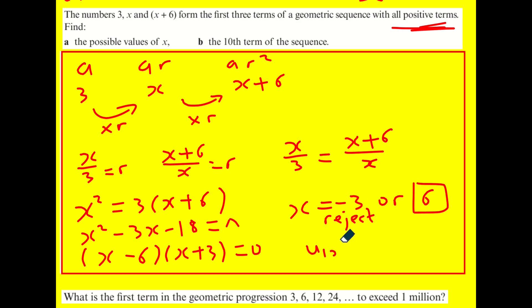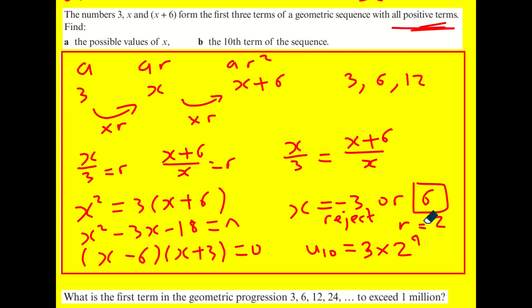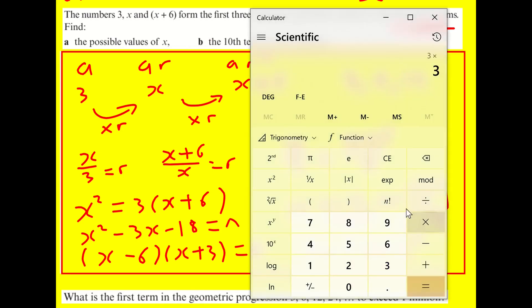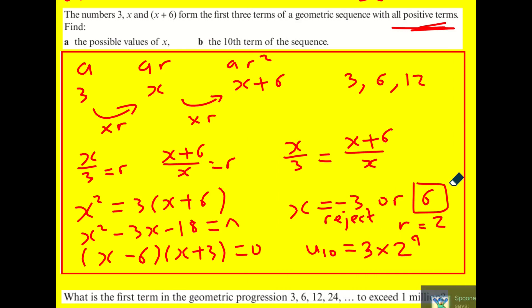With x = 6, the sequence is 3, 6, 12, so r = 2. The 10th term is u_10 = 3 × 2^9 = 1536.